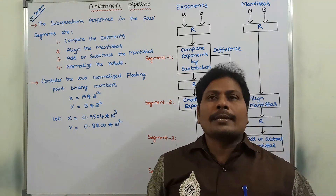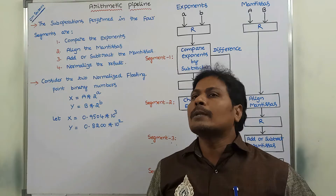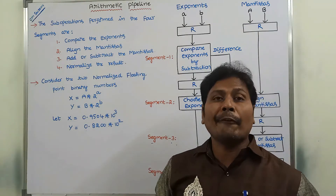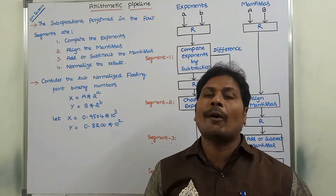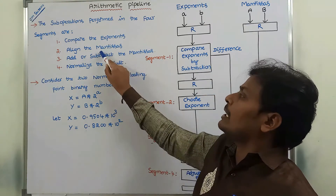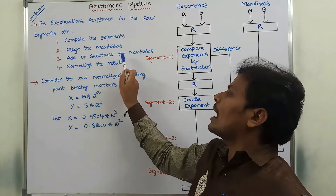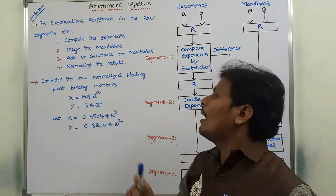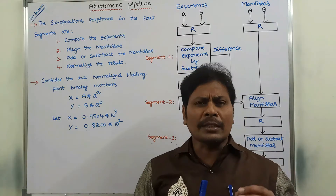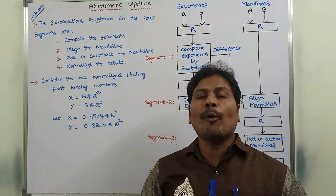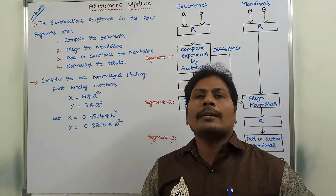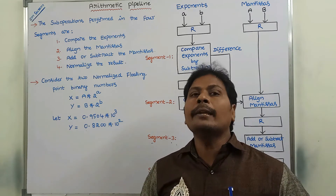The floating point operations can be decomposed into several sub-operations. These are the sub-operations that can be performed in floating point addition and subtraction operations. The first sub-operation is compare the exponents. The second one is align the mantissas. The third one is add or subtract the mantissas. And the fourth one is normalize the result. These four sub-operations are performed across four segments.